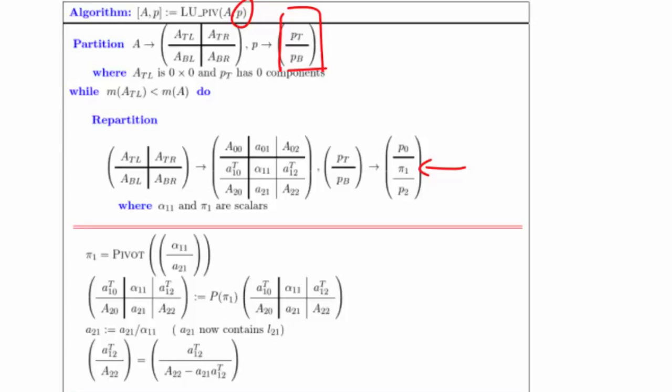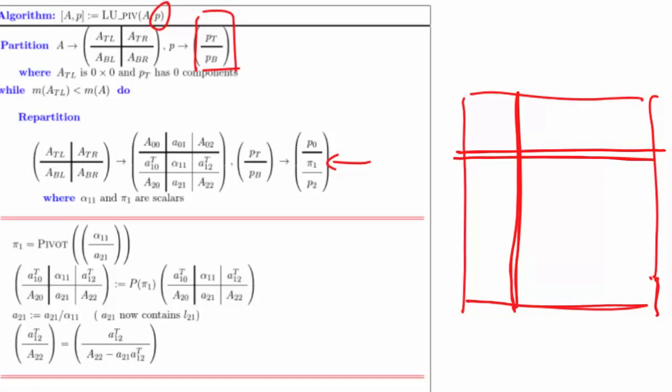Now let's make a picture so that we can understand what's going on. At the typical step, we've gotten to this point in the matrix. We're already finished with these parts right here. We've partially updated this part right here. Now, we repartition.